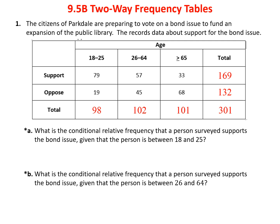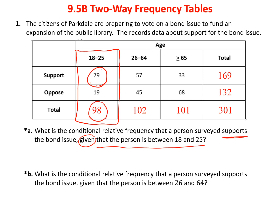Now, if I want to know the conditional relative frequency that a person supports the issue given that they are between 18 and 25 — notice the word 'given,' which is my condition — I'm only looking at that age category. The number of people who support in that group is 79. The conditional frequency is 79 divided by 98, the column total, which equals 0.81. In other words, 81% of the young people support the bond to expand the library.